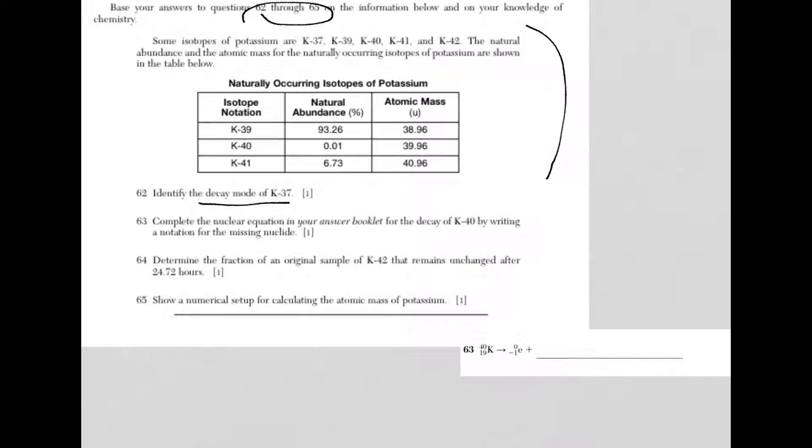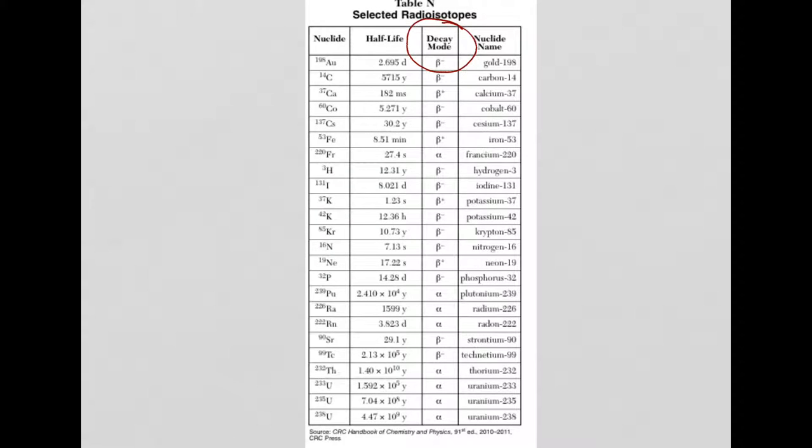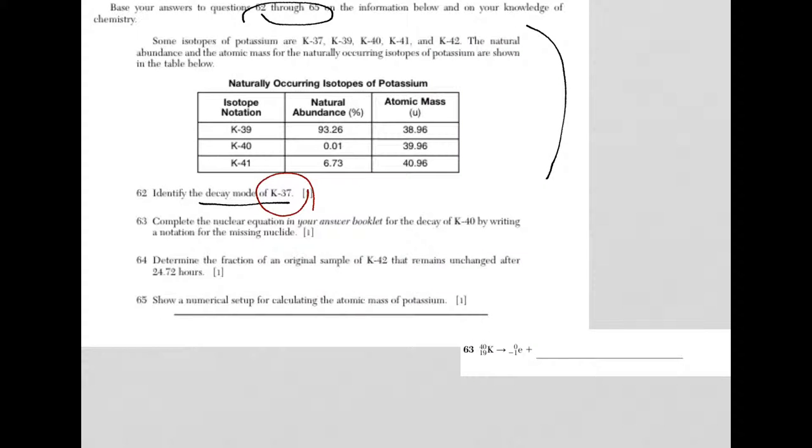If I go back to the question, we're looking for potassium-37. So I go right here, I find potassium-37. And here it is. It's what's called a positron or a positron decay. You could put the symbol. You could also put a positron. The other symbol looks like this. Or you could just copy it right from the table. Or it's positron decay.